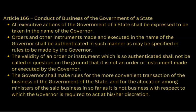Under Article 166, conduct of business of the government of state: all executive actions of the government of a state shall be expressed to be taken in the name of the Governor. Orders and other instruments made and executed in the name of the Governor shall be authenticated in such manner as may be specified in rules made by the Governor. The validity of an order or instrument so authenticated shall not be called in question on the ground that it is not an order made or executed by the Governor. The Governor shall make rules for the more convenient transaction of the business of the government of the state and for the allocation among ministers, in so far as it is not business with respect to which the Governor is required to act at his discretion.